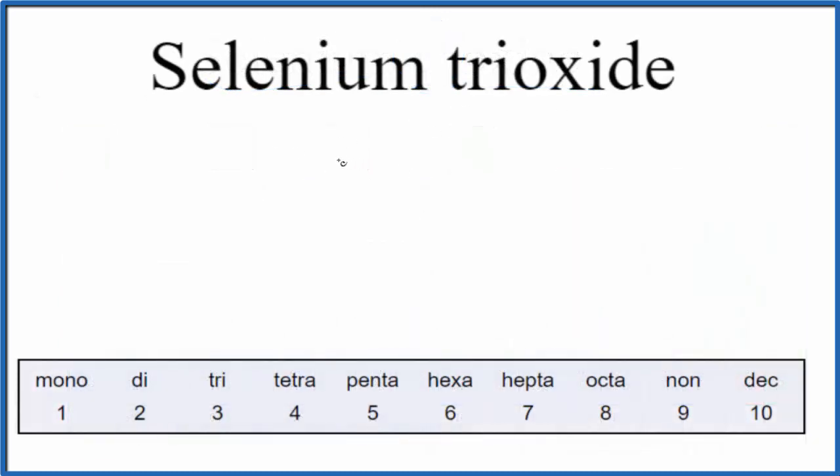So the element symbol for selenium, that's SE, and then oxide, that's from oxygen. Since we don't have anything written in front of the selenium, we assume there's just one and we don't write the one. For the oxygen, we have the tri here, and tri means three. So we're going to put a three after the oxygen.